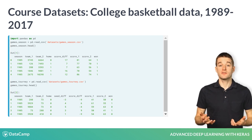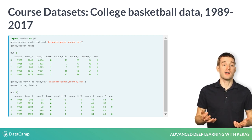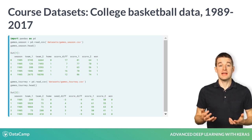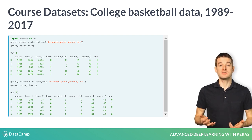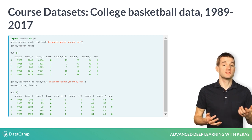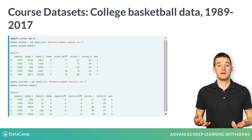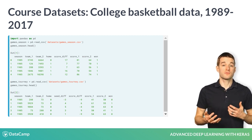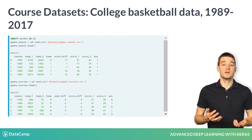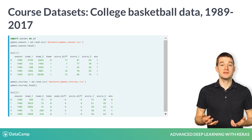Other than the seed difference, the two datasets have identical columns. Within a given year, a team's roster stays relatively constant, but between years it can change a lot as seniors graduate and freshmen start. Therefore, for every year, each school is given a unique integer ID.